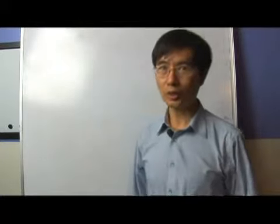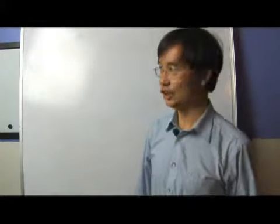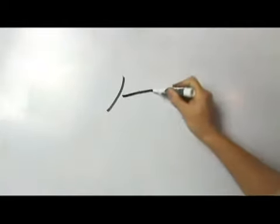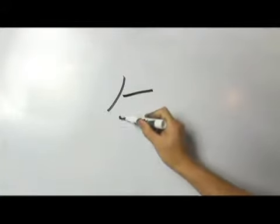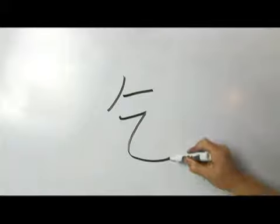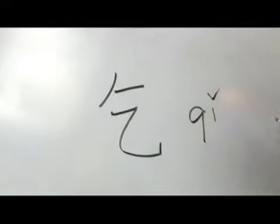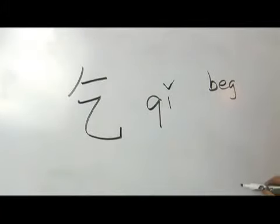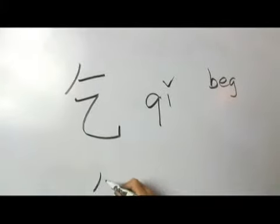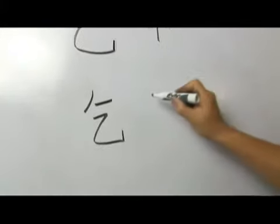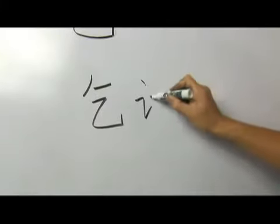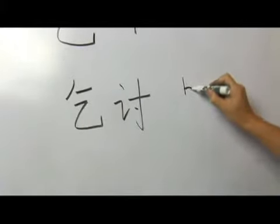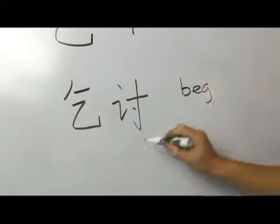We are going to talk about the character qi. Let's start with our radical pai and heng. That means to beg — like in 'to beg, to ask for something.'